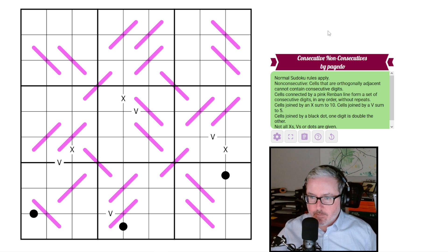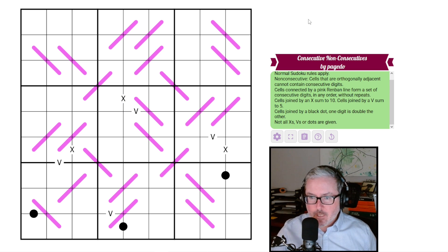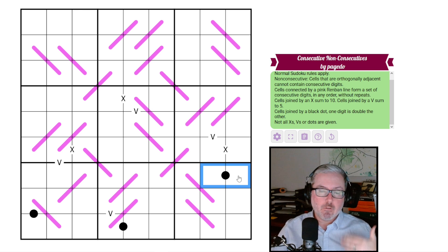Cool. What else do we have then? Cells joined by an X sum to 10. Cells joined by a V sum to five. So these guys will add to five because there's a V between them. These will add to 10 because there's an X between them. Self-explanatory. Cells joined by a black dot, one digit is double the other. So black kropki. These two will be in a two-to-one ratio, or as noted, one of them will be double the other.